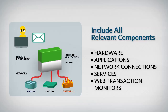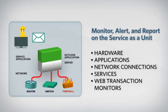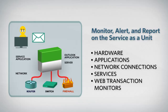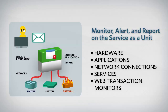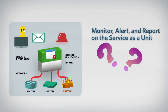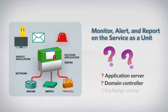In order to see how your entire service is performing 24/7, you will need to monitor, alert, and report on the service as a unit. For example, say you get a call that a particular business service is down. How will you know if a particular server is the issue if you don't understand the relationship between the Exchange Server and domain controller?